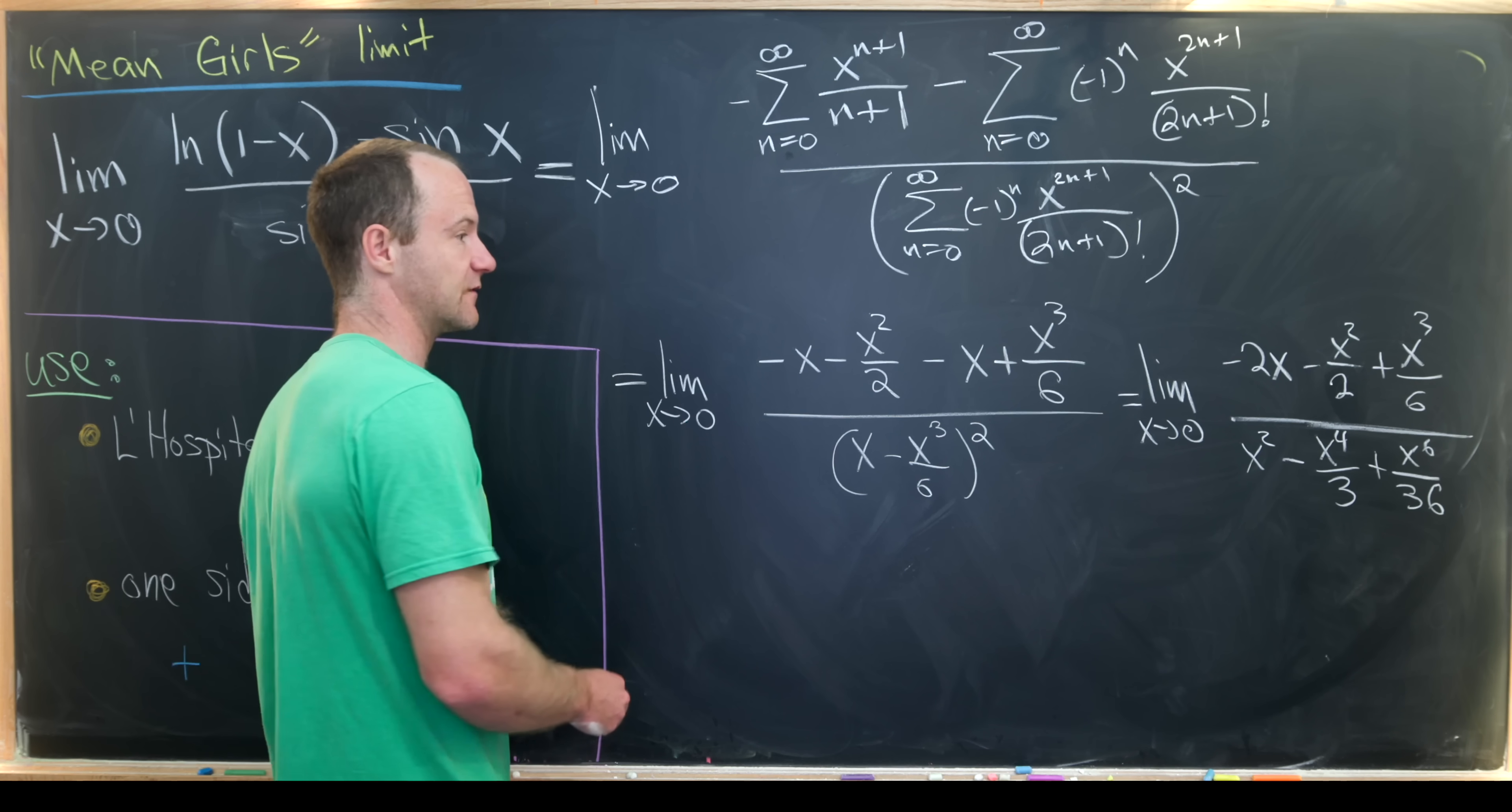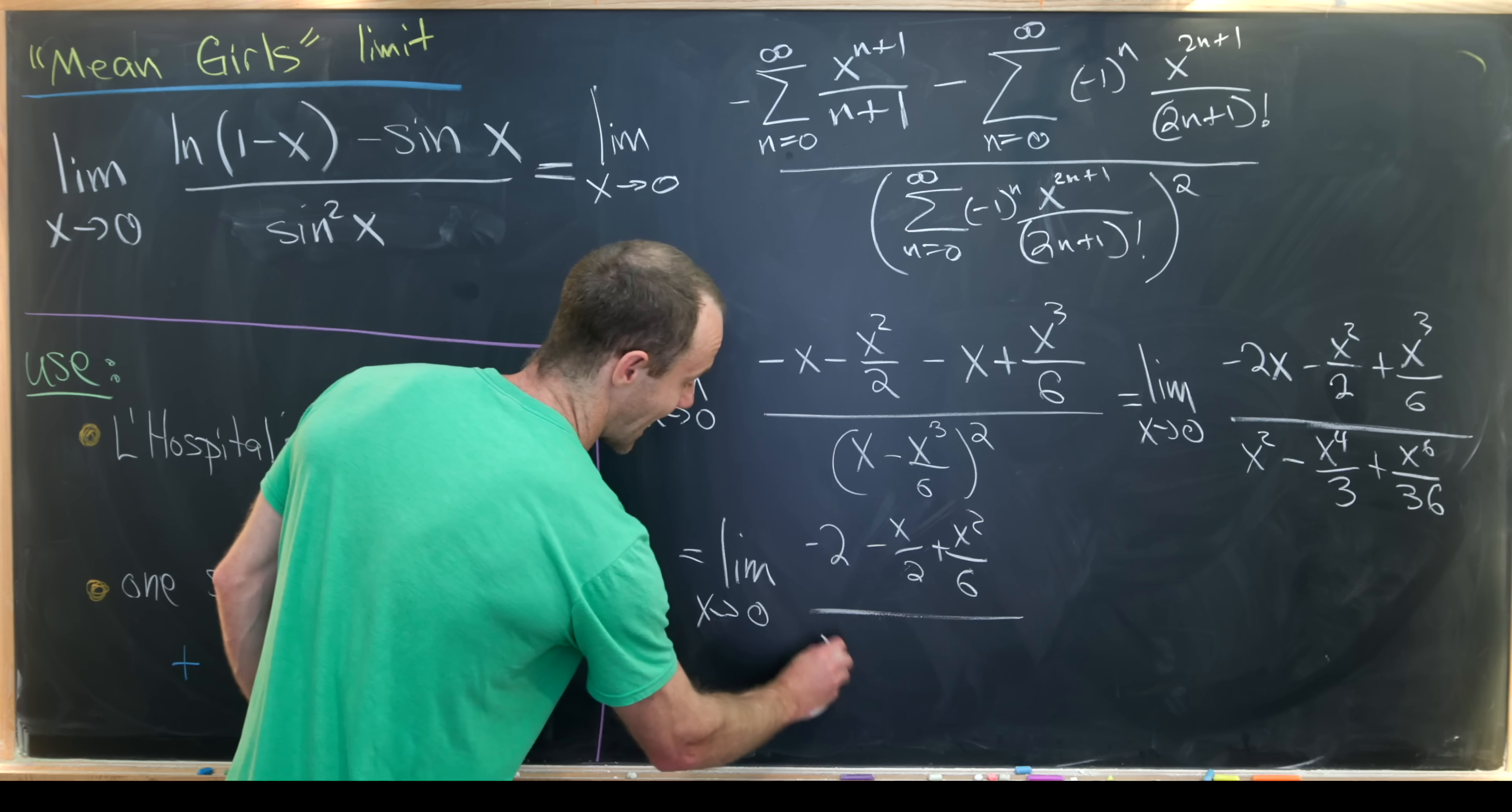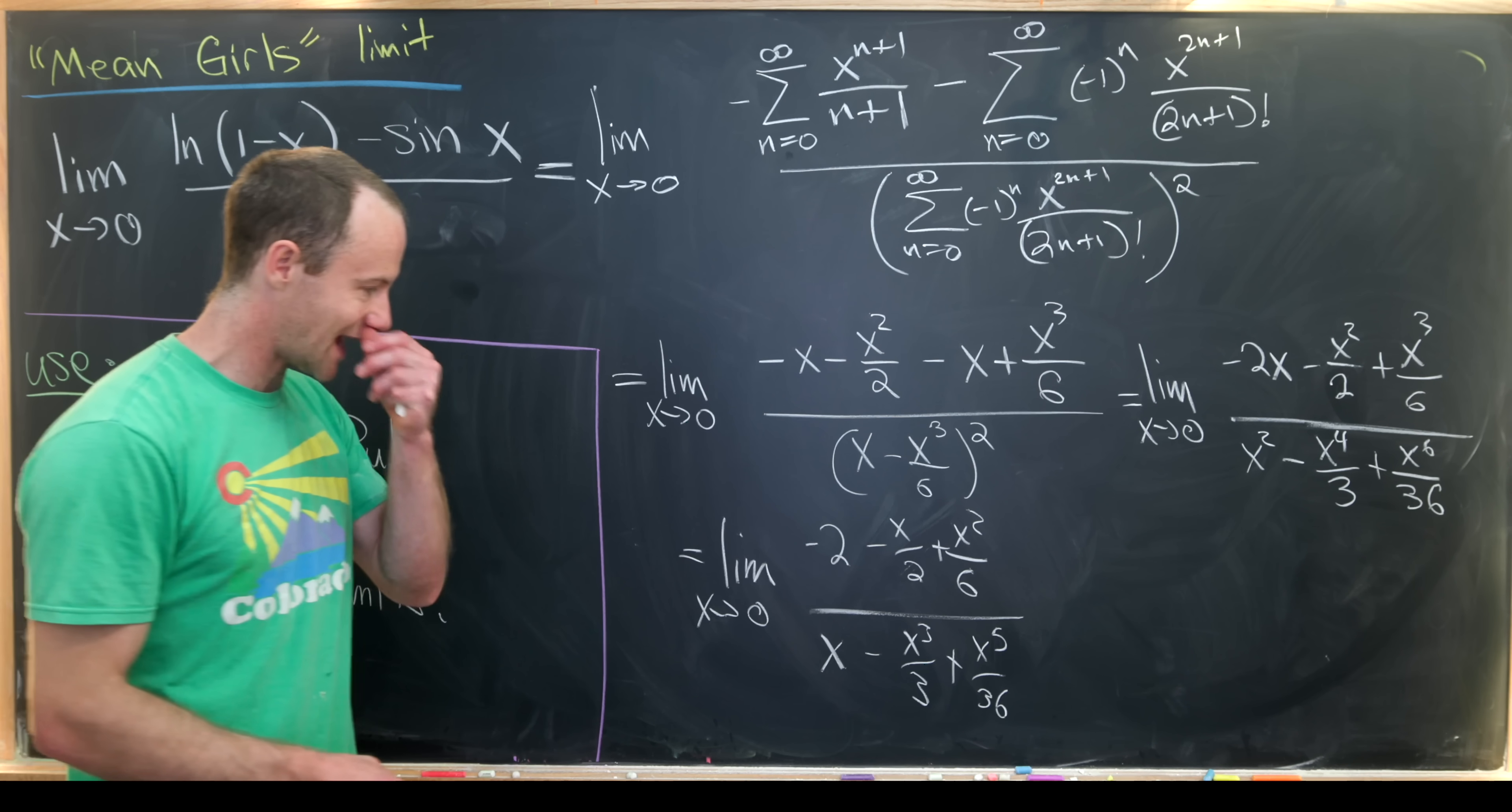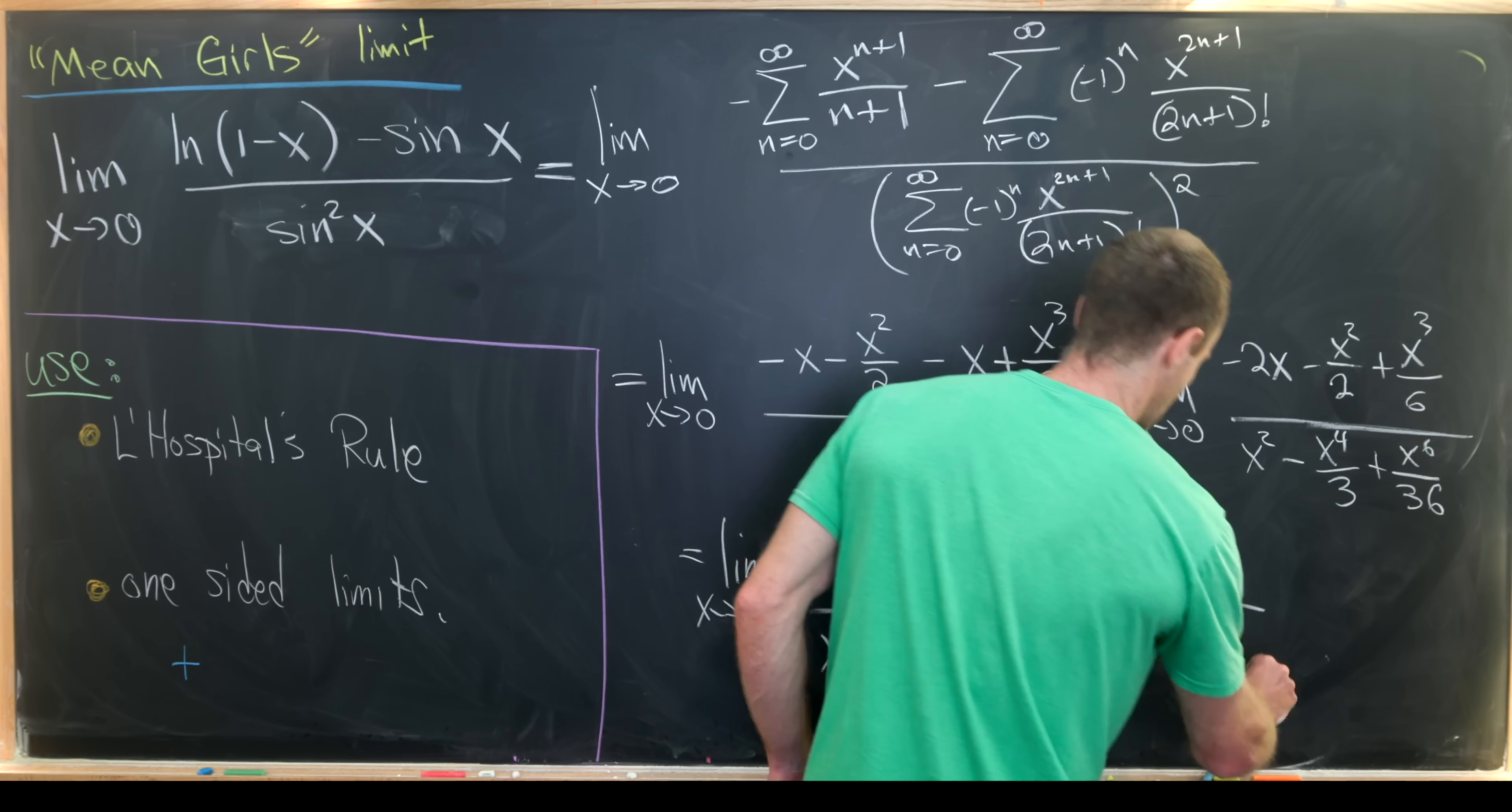And then from here, we can factor an x out of the numerator and the denominator and cancel. That leaves us with the limit as x goes to 0 of negative 2 minus x over 2 plus x squared over 6 all over x minus x cubed over 3 plus x to the 5 over 36. Now let's notice as x goes to 0, these guys in the numerator and the denominator won't really contribute anything because they're not the leading terms in the numerator and the denominator, giving us the limit as x goes to 0 of negative 2 over x.